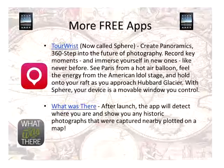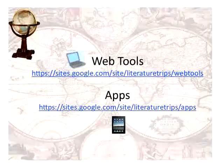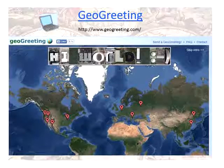There are a couple more free apps. Tourists — I think they've now changed their name to Sphere — will let you create a 360-degree panoramic view of a place you're looking at with the iPad. There's also another app that shows historic photographs that were captured; when you let it find your location, it shows you historic photographs around your particular area. All of these are on the website under web tools and apps, and there are lots more.